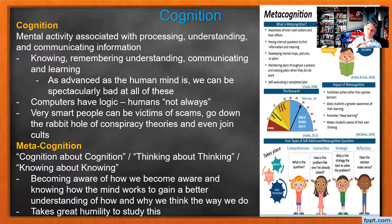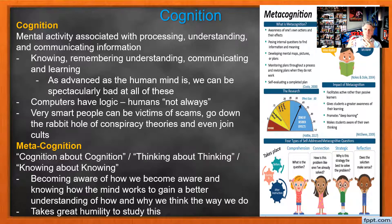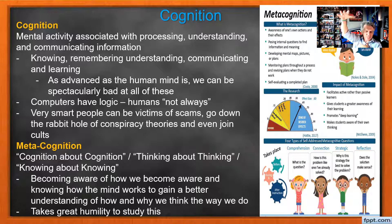Very smart people can be victims of scams, can go down the rabbit hole of conspiracy theories, and even join cults — which is basically something based on a conspiracy theory. You had genius people that were part of the Heaven's Gate cult back in the 80s or 90s who as a group committed suicide because they felt a spaceship was going to pass at a certain time and their spirits would be lifted.